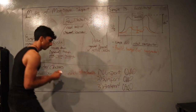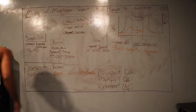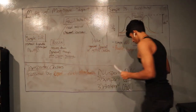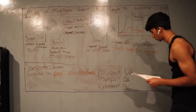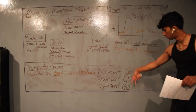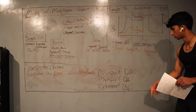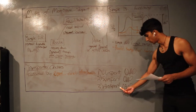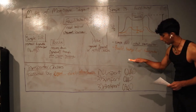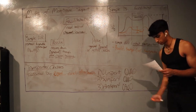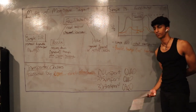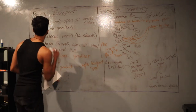Transporters can be classified by directionality into three types. A uniport moves one substrate at a time in one direction. A symport moves two different substrates in the same direction. An antiport moves two different substrates in opposite directions.